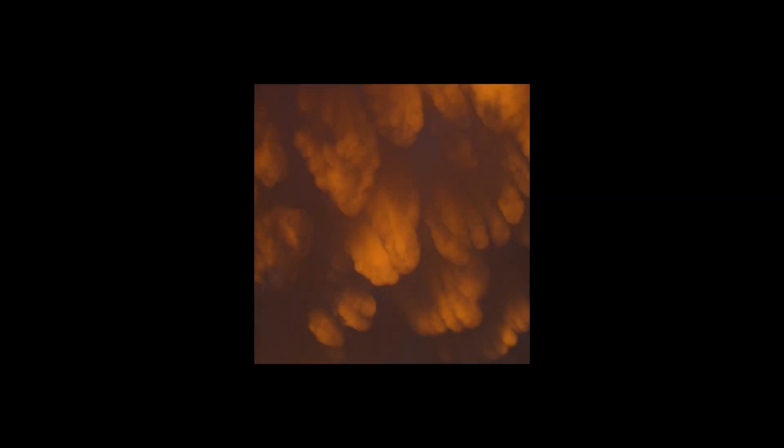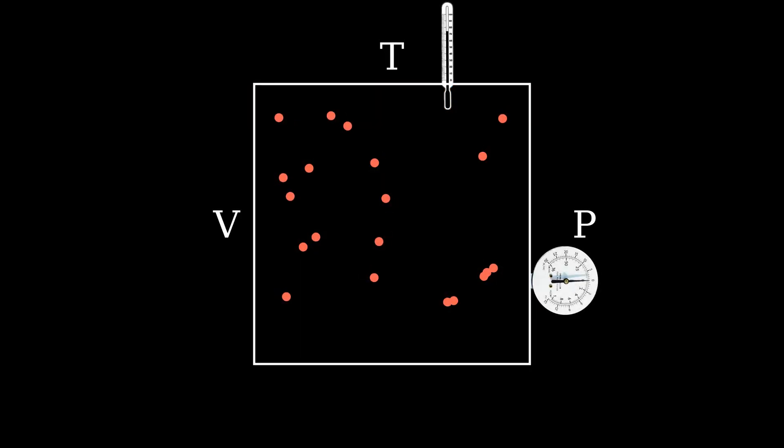If we have some closed system, let's say a gas, we might know things like its volume, temperature, and pressure, but we generally do not know what the precise location and velocity of every molecule in the system is.